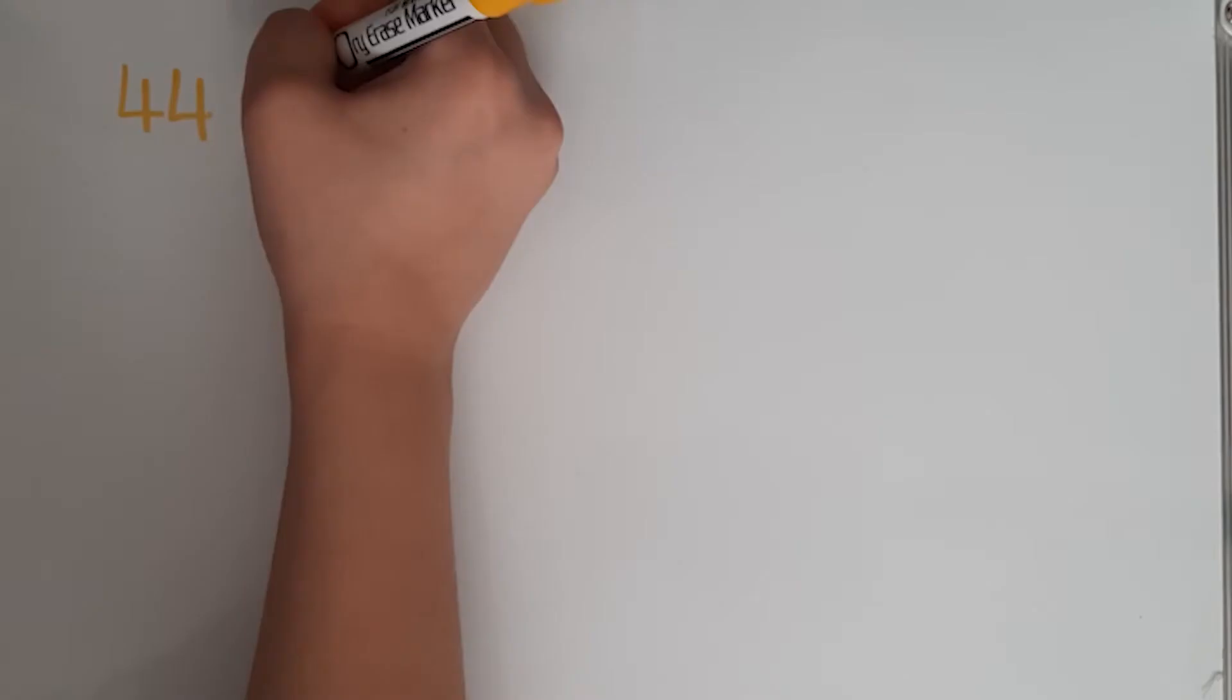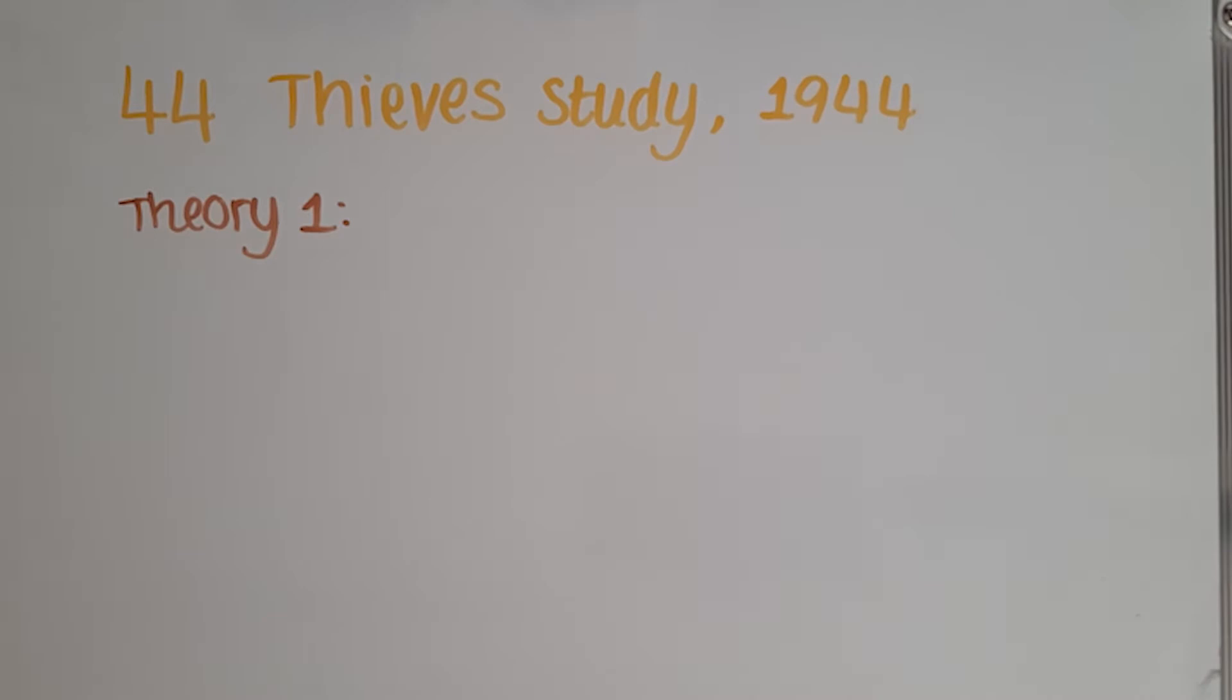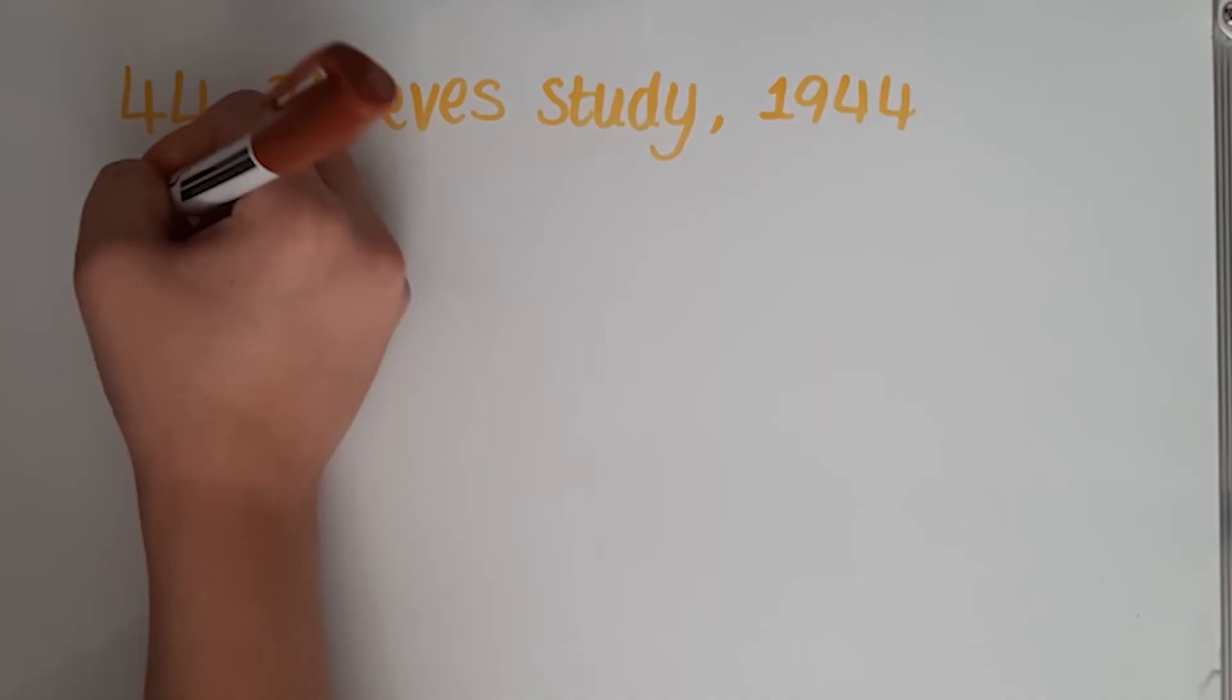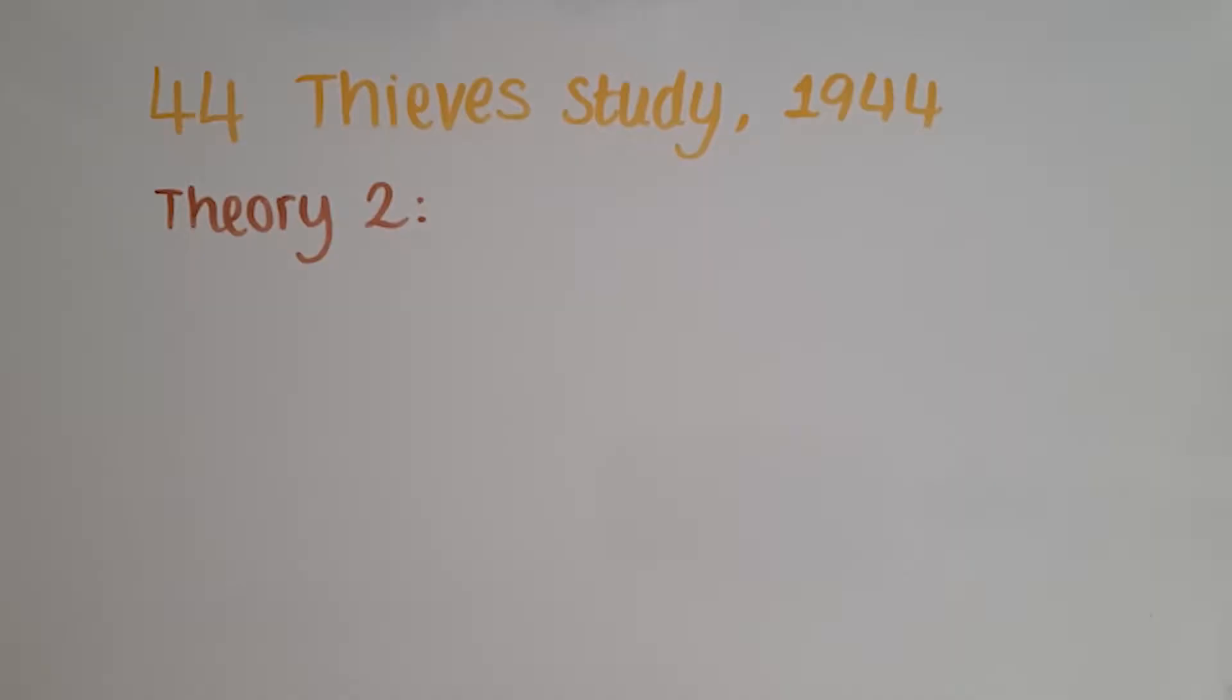In 1944, Bowlby conducted a study which he named the 44 Thieves Study. This study was to test his theories regarding the relationship between the infant and its mother during the first five years of life being most crucial to socialisation, and that disruption of this primary relationship could lead to a higher incidence of juvenile delinquency, emotional difficulties, and antisocial behaviour.